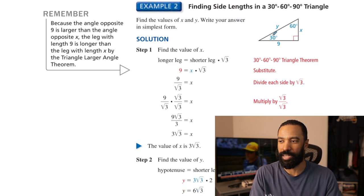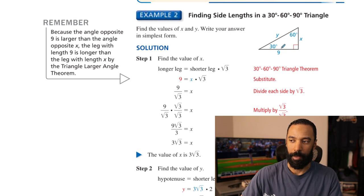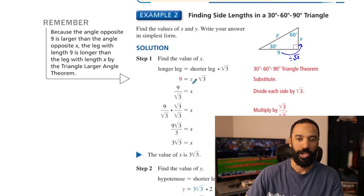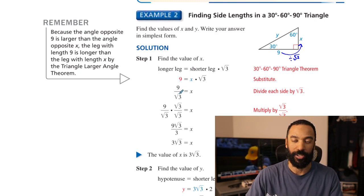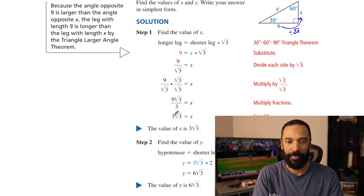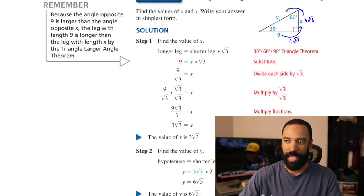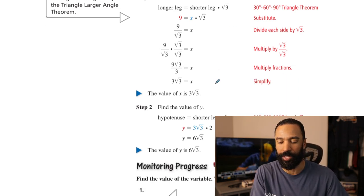Let's find side lengths in a 30-60-90 triangle. Say you have the longest leg of 9, opposite the 60. First, let's get the side opposite the 30 — that should be root 3 times smaller. So we divide 9 by root 3, and we must rationalize the denominator: multiply top and bottom by root 3. Root 3 times root 3 is 3, and 9 over 3 is 3, so you're left with 3 root 3. That's x. To get y, you multiply that value by 2, giving 6 root 3 for the hypotenuse.